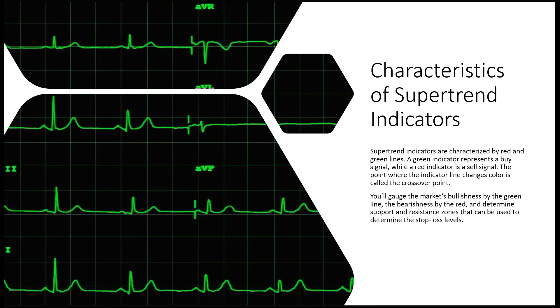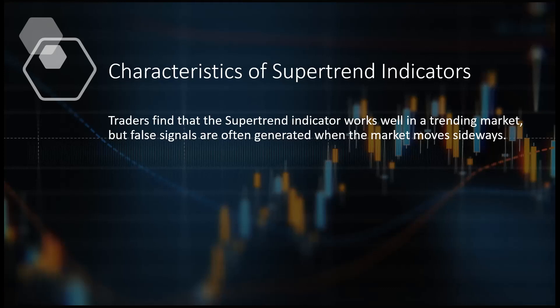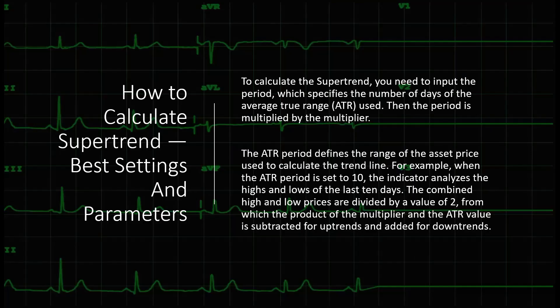Supertrend indicators are characterized by red and green lines. A green indicator represents a buy signal, while a red indicates a sell signal. You gauge the market's bullishness by the green line and the market's bearishness by the red line. Traders find that the Supertrend Indicator works well in trending markets, but false signals are often generated when the market is moving sideways.